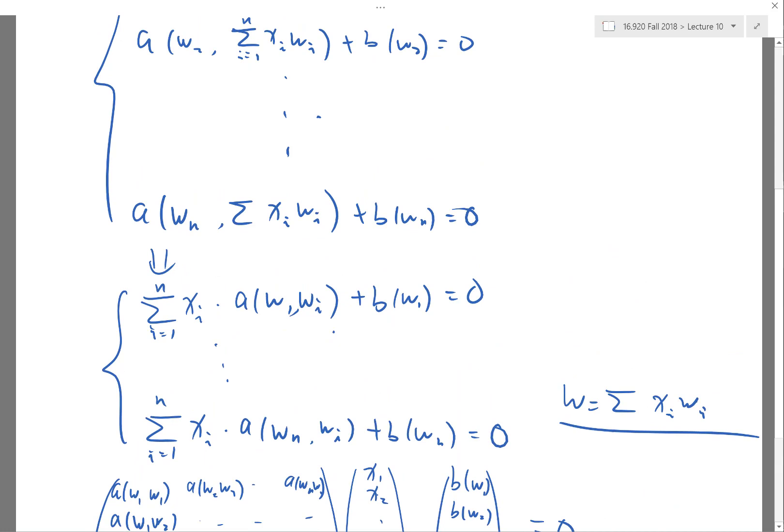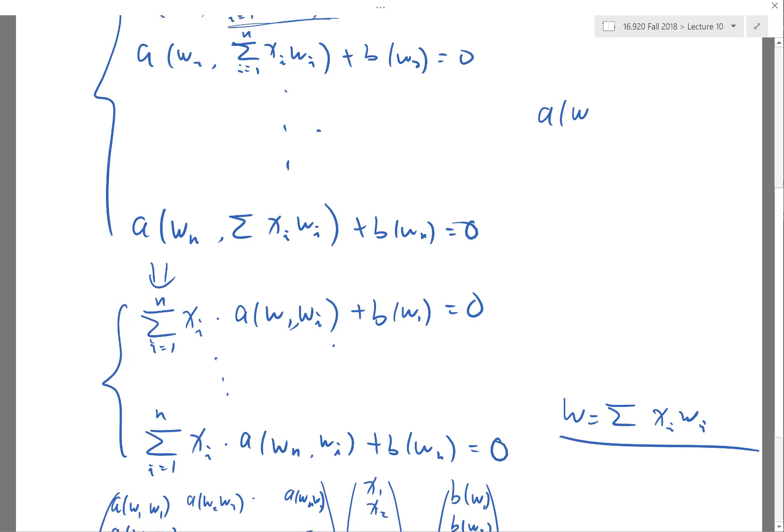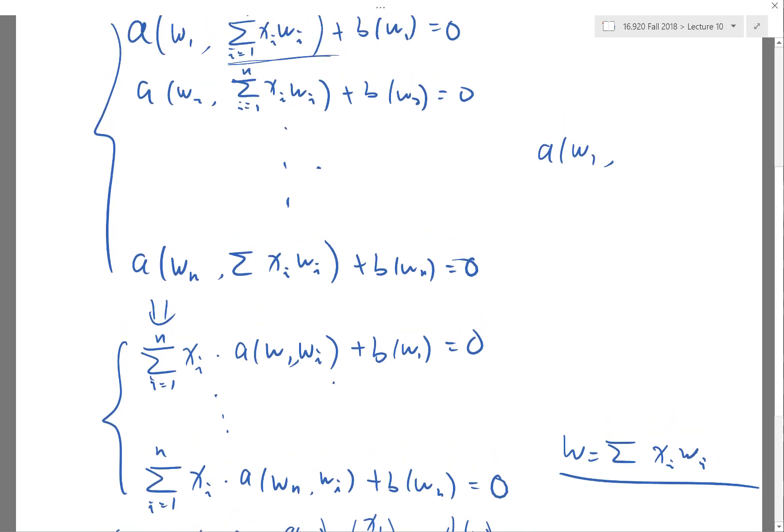Yes, how do I take out that summation? How do I go from here to here? That's basically using the linearity of A with respect to the second argument. A is a bilinear function.